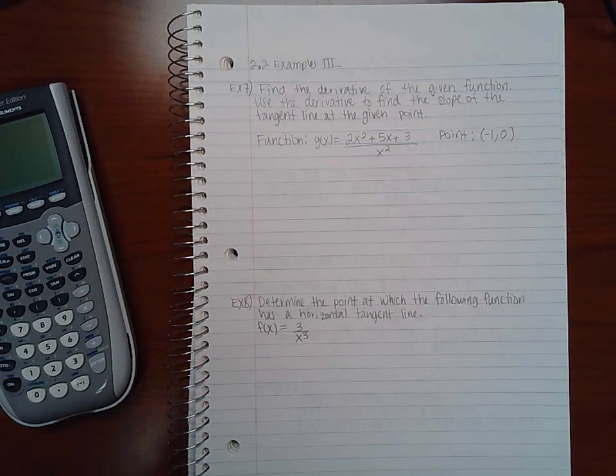This is 2.2 examples part 3. Example 7 says find the derivative of the given function. Use the derivative to find the slope of the tangent line at the given point.